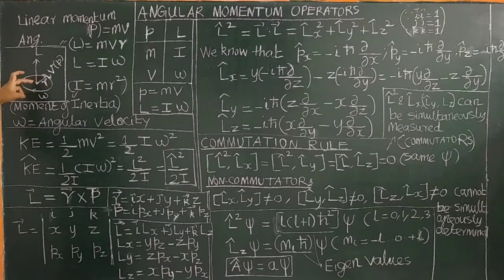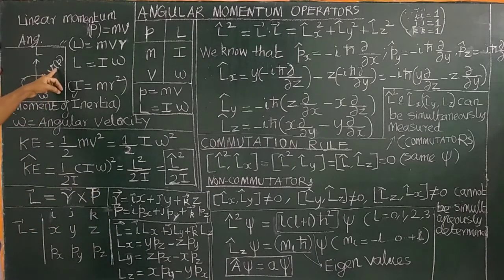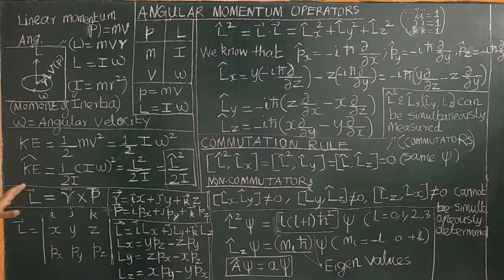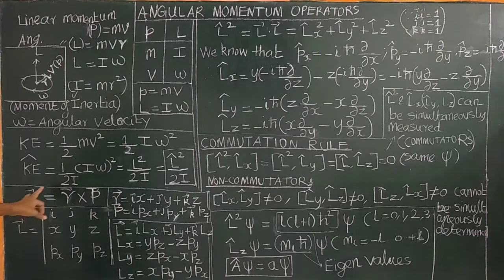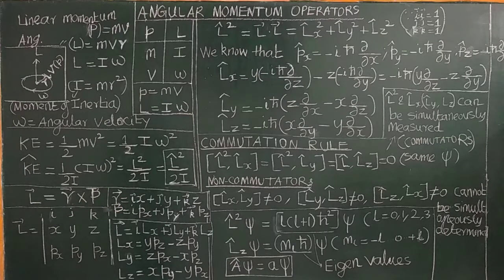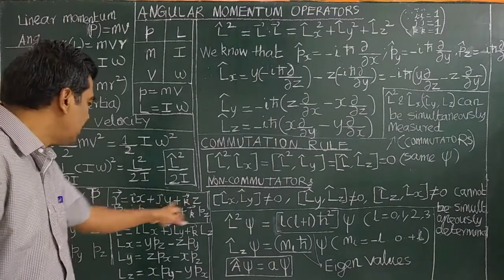If you look at the radius vector in this direction: x-axis cross y-axis gives the angular momentum in the z-axis. The radius vector is in the x-axis, and the linear momentum vector is in the y-direction. The angular momentum vector is perpendicular to r and p. Therefore, L vector equals r vector cross product p vector. The radius vector is given by i-vector x plus j-vector y plus k-vector z, where i, j, k are unit vectors.